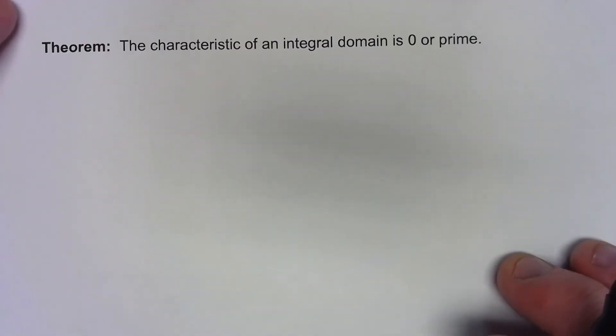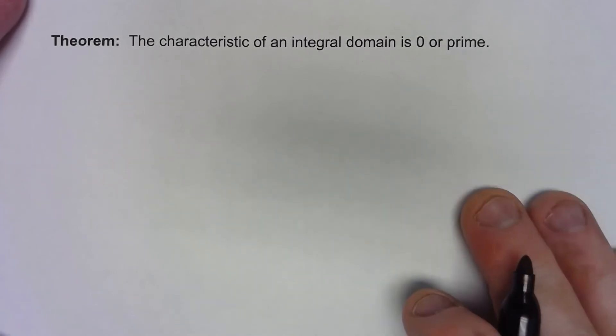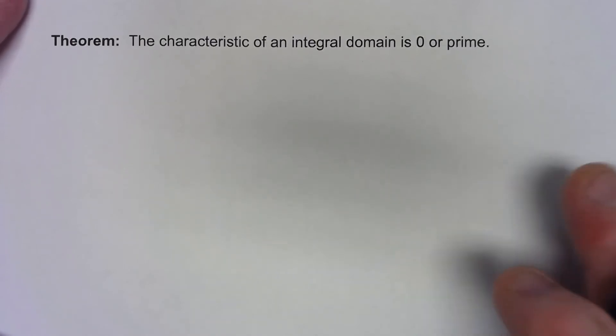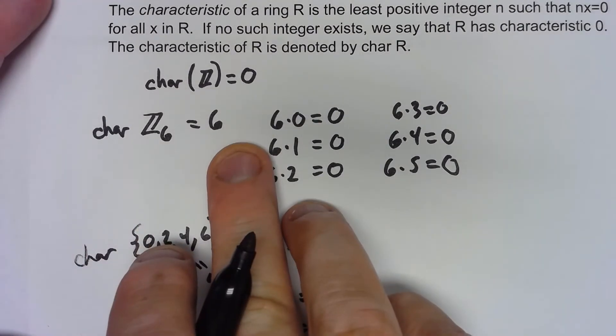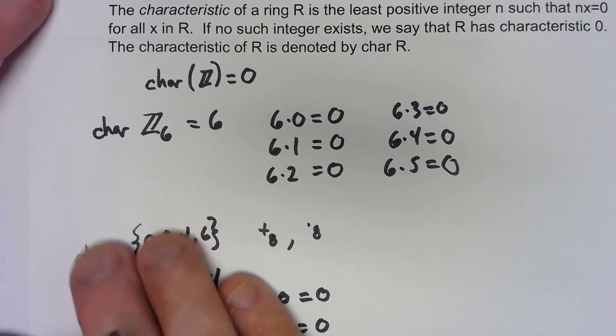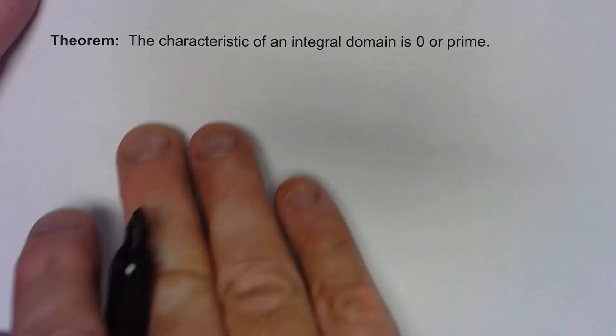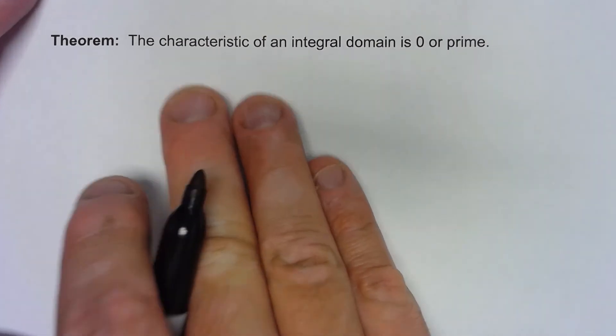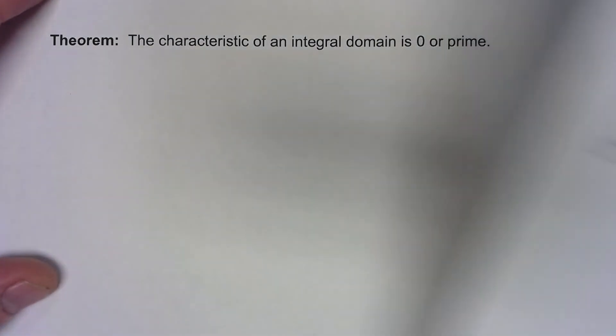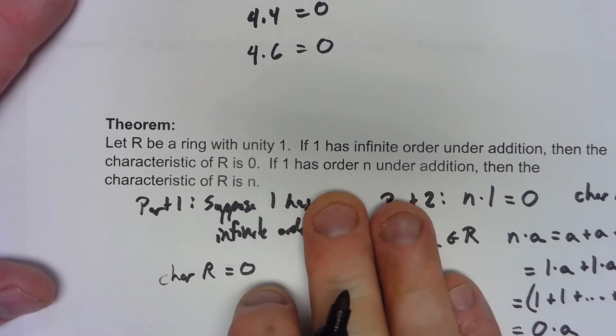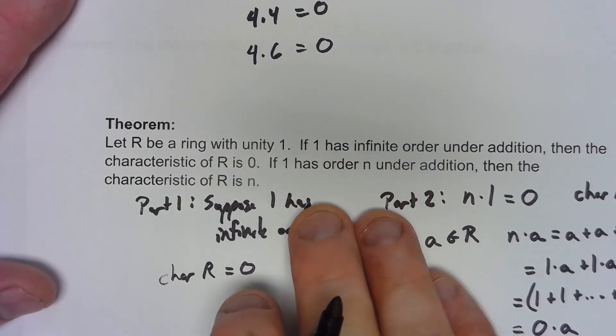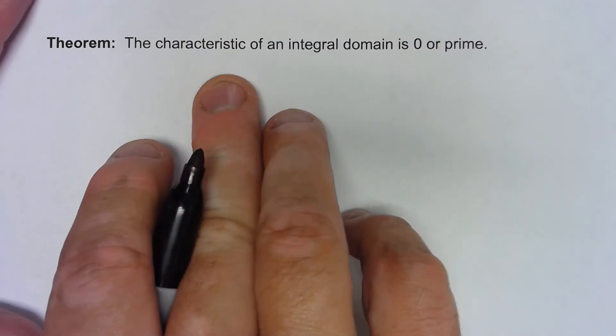Let's show one more theorem regarding the characteristic. If I have an integral domain, the characteristic is either 0 or a prime number. So it couldn't be like over here where I said the characteristic of Z6 is 6. If there was an integral domain, which of course Z6 isn't, the characteristic of an integral domain has to be either 0 or prime. I'm actually going to use that last theorem that we proved here. If it's an integral domain, it's a ring with unity. So all I need to really look at is figure out the order of 1. If I know what the order of 1 is, I know what the order of the entire integral domain is.